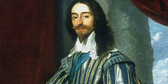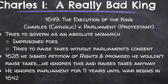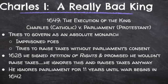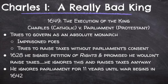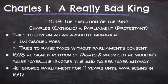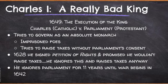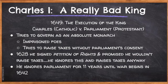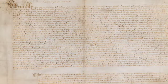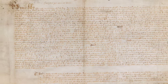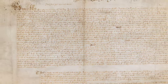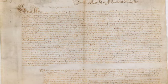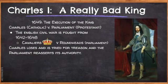A couple things to keep in mind: Charles was Catholic and Parliament was Protestant. So not only do you have a power struggle dynamic happening, you also have a religious power struggle dynamic. Charles tries to govern as an absolute monarch, he imprisons his foes, and ultimately tries to raise taxes without Parliament's consent. In 1628 he signed a Petition of Rights and promised he wouldn't raise taxes without Parliament's consent. However, he ignores that order and raises taxes anyway.